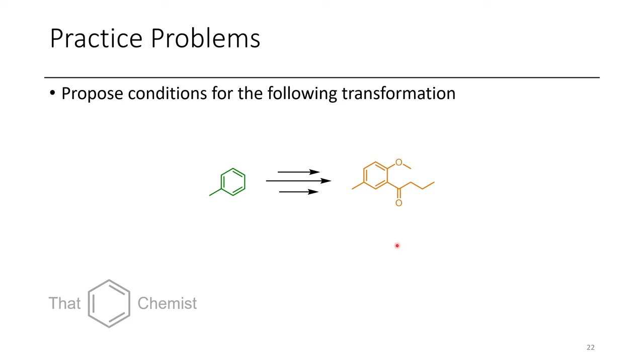And so with that, I'd like to assign a few practice problems for this lecture. First, starting with toluene, convert this to the molecule shown on the right. There's not one correct answer for these because there's many possible different synthetic pathways that could work. I just want to see reactions that would theoretically work. You might come up with a different synthesis than I do, and that's totally okay.